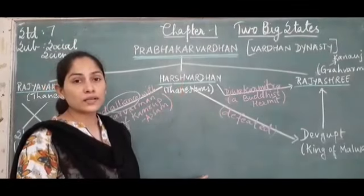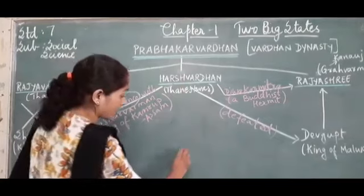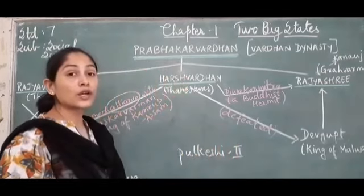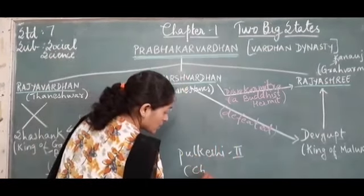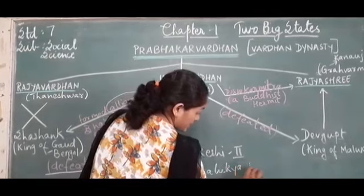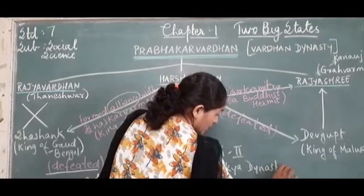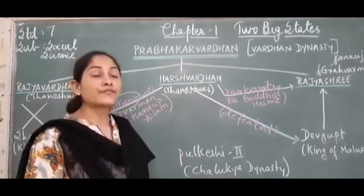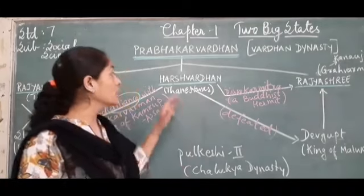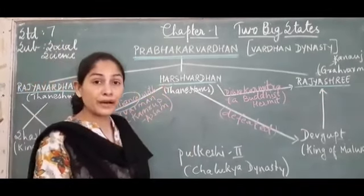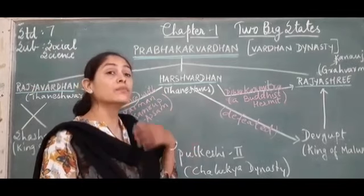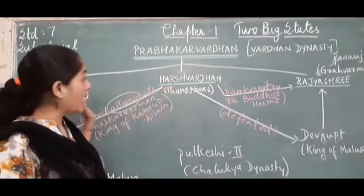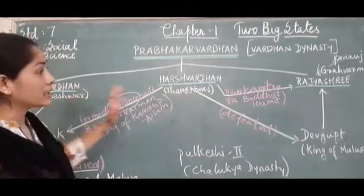Harshvardhan was unsuccessful in defeating Pulkeshi II, who was the ruler of the Chalukya dynasty in South India — about whom we are going to learn later on. Despite that, Harshvardhan kept progressing day by day and Thaneshwar emerged as a very powerful kingdom during that time.